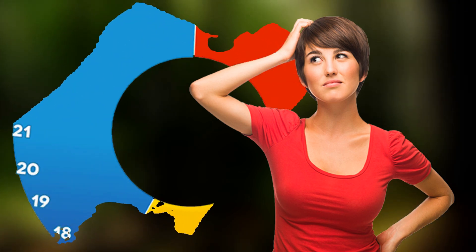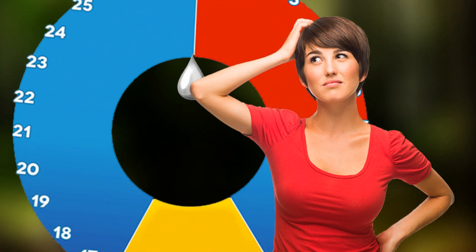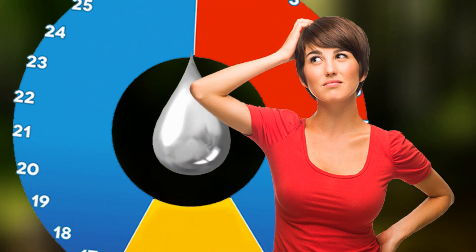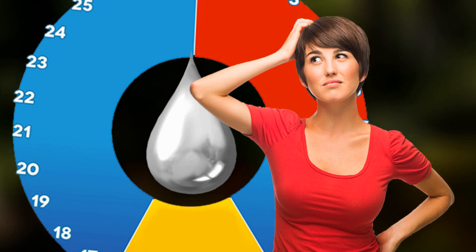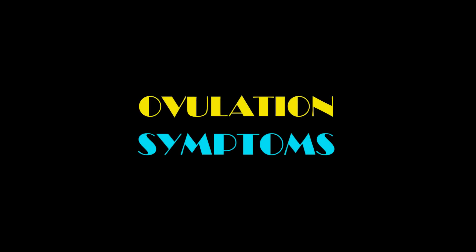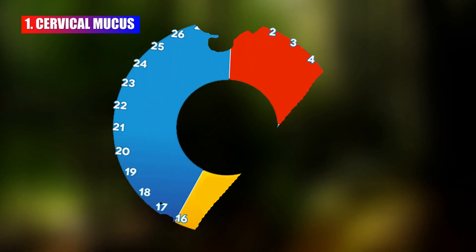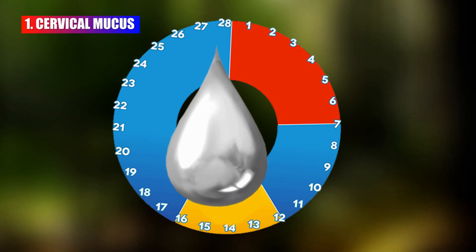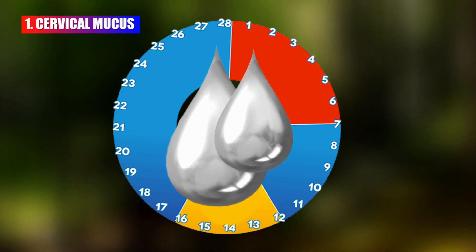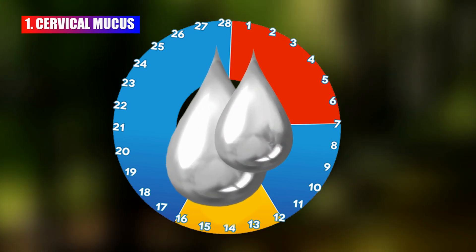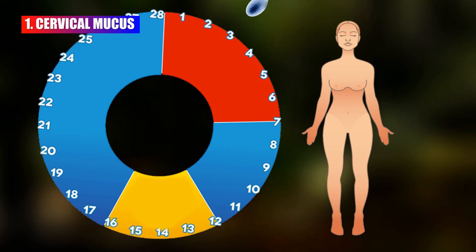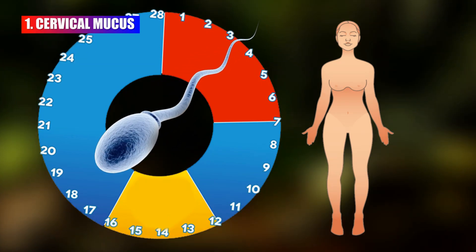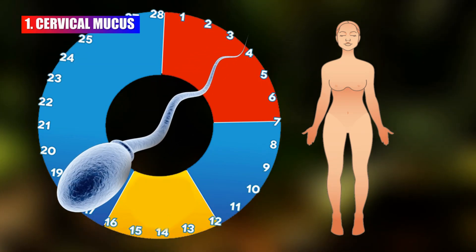Women can recognize their ovulation days by identifying a few ovulation symptoms. Cervical mucus undergoes specific changes during the menstrual cycle, and these changes can be particularly noticeable around the time of ovulation.